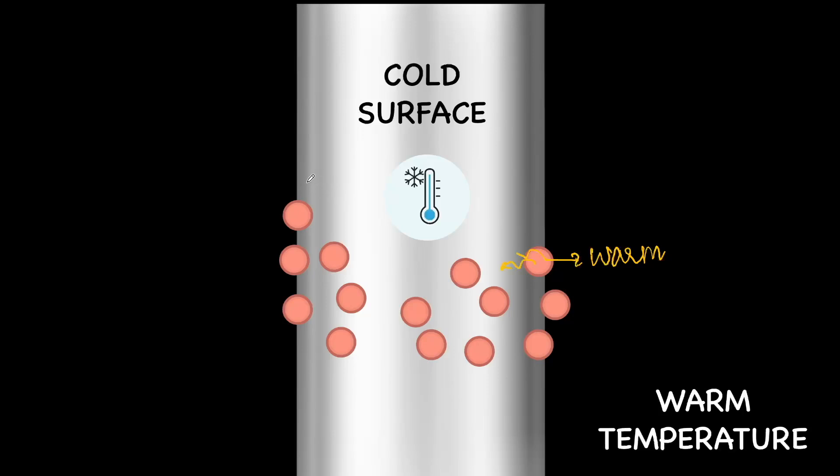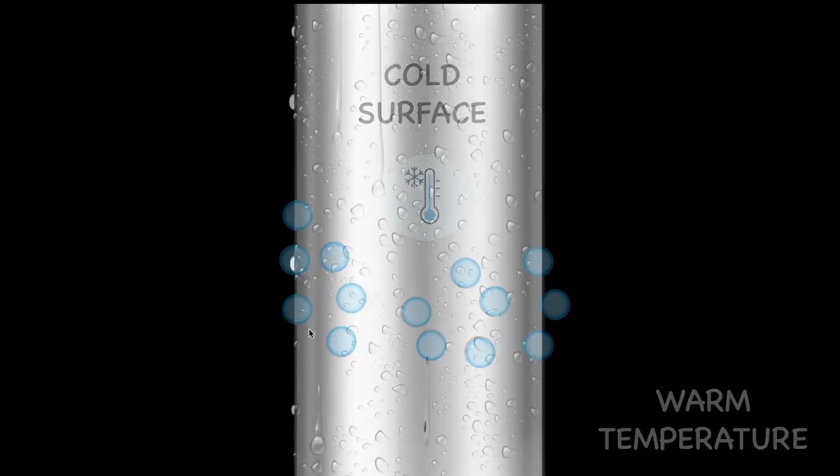When the heat transfers away from the vapor to the surface, water vapor will undergo a very interesting change. Because all the heat is going away, these molecules will slowly start clumping up, eventually forming water droplets that we see on the surface of the can.